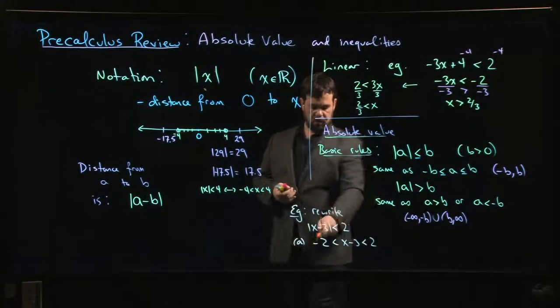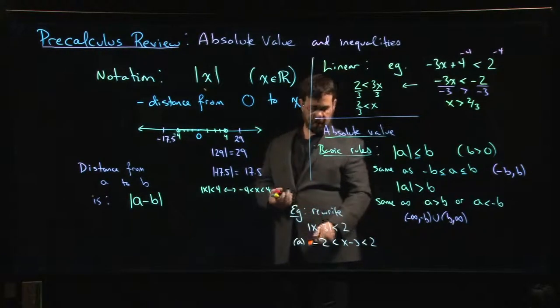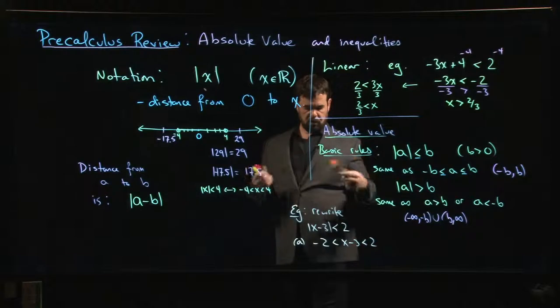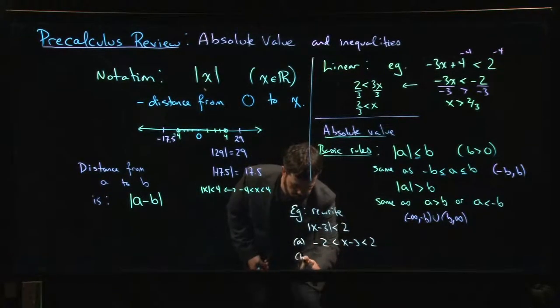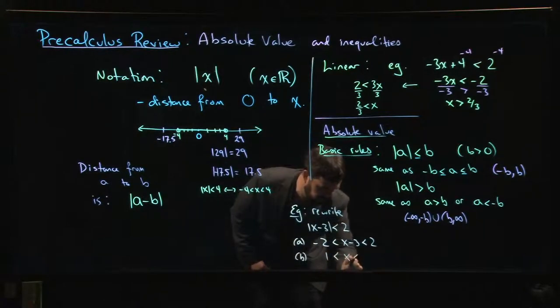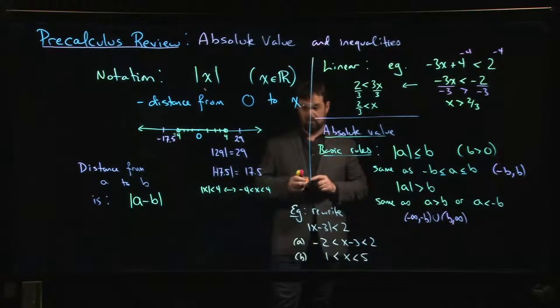That's fine. You can add something to each part of a compound inequality. And in particular, the thing that we want to add, we want to get rid of that minus 3. So we add a 3. So minus 2 plus 3 becomes 1 less than x less than 2 plus 3, which is 5. So those are the two steps for solving this sort of inequality.